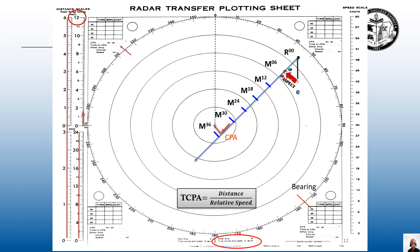As far as relative motion goes, this vessel is on a heading of 315 degrees, so it's going to crab down this relative motion line. At M06, we see the port light and masthead lights. At minute 12, 18, and 24, we still see the port light and masthead lights. Same at M30. However, when we look off the starboard quarter at CPA, we'll see both her port and starboard sidelights and masthead lights. And at M36, we'll be able to see her starboard light and masthead lights. That's how relative motion works — this contact is heading 315 degrees but crabbing down the relative motion line toward us.